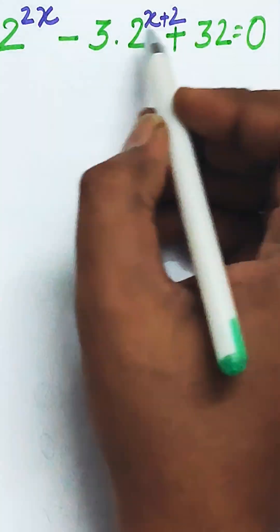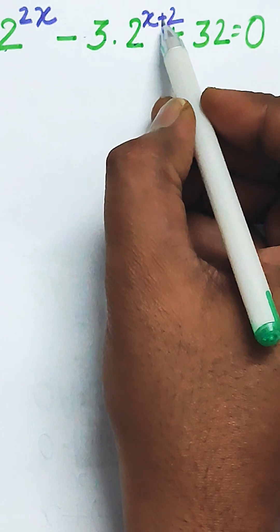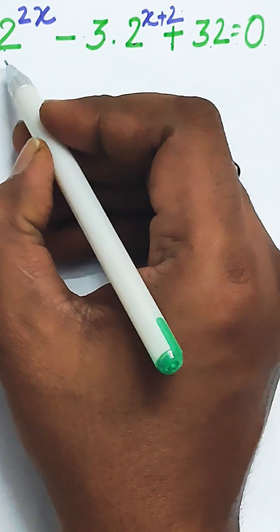This is a question in front of us where 2 to the power 2x minus 3 into 2 to the power x plus 2 plus 32 equal to 0. This needs to be solved.